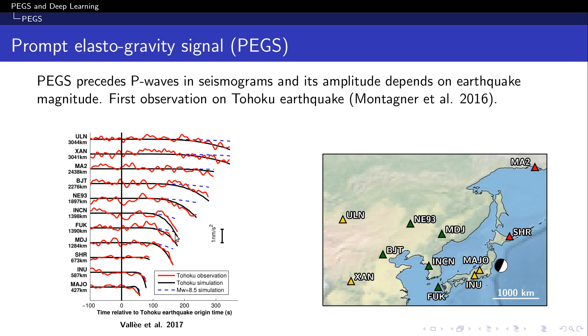So it's important to notice three things here. First, there is a substantial difference between amplitudes for a 9.1 earthquake, Tohoku in this case, the black and red curves, with a simulated amplitude for a magnitude 8.5 earthquake, indicated by the dashed blue lines. So this means that PEGS amplitudes depend on magnitude and could provide critical information before the arrival of P waves in the context of early warning systems.